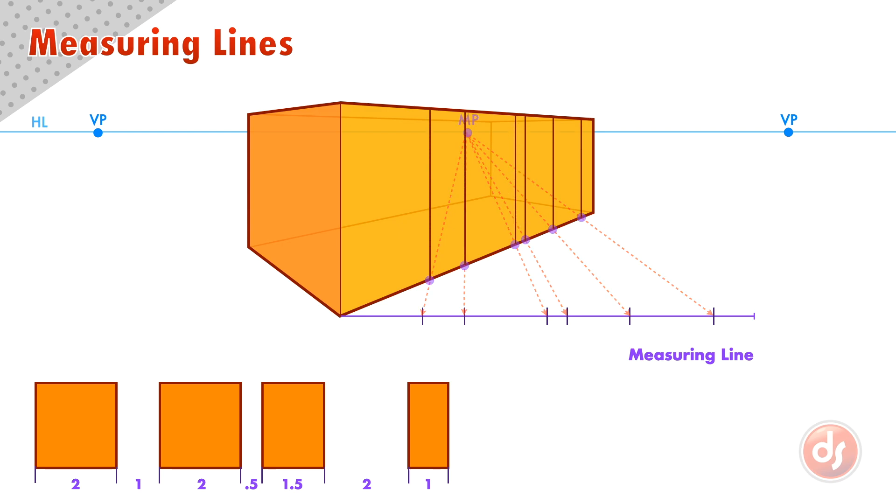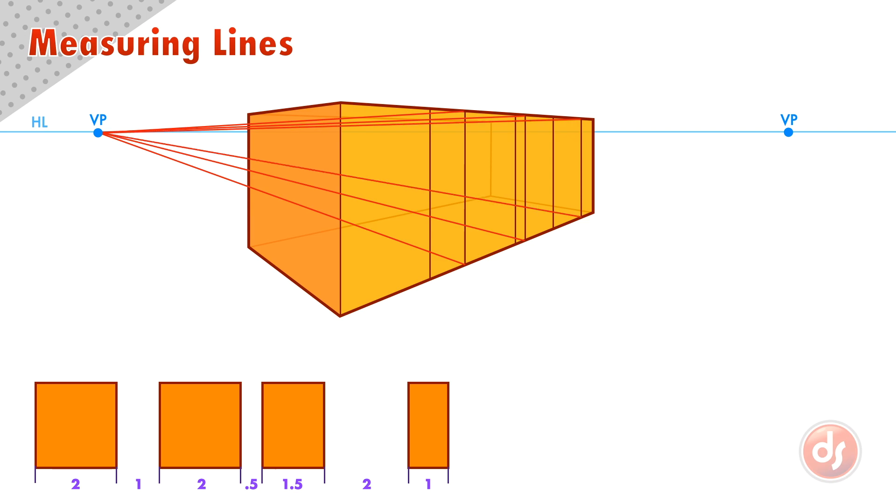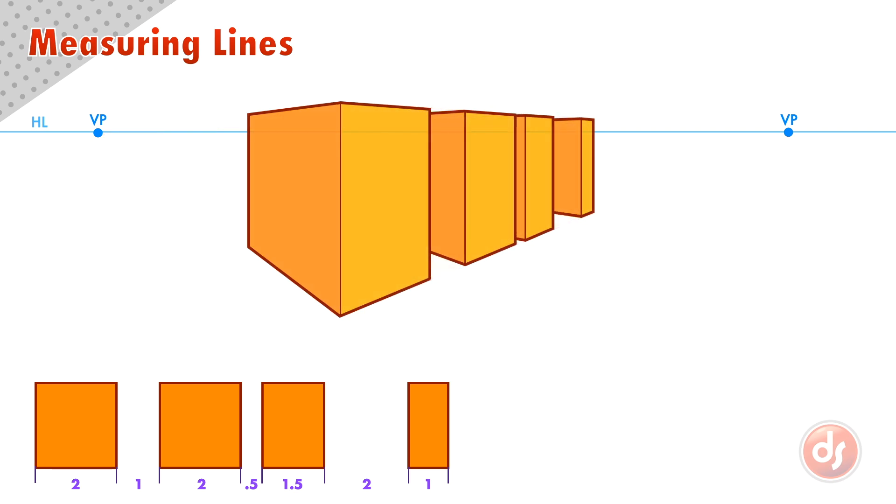We can draw lines up from these points to the top of our box plane, and then make lines to our left vanishing point. We cut away the spaces to exactly recreate our reference in two-point perspective.